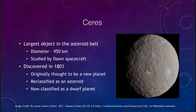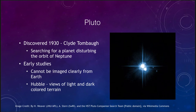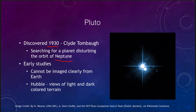The best known of the dwarf planets is of course Pluto, discovered in 1930 by Clyde Tombaugh. He was searching for a planet disturbing Neptune's orbit, and eventually found Pluto. It was later determined that Pluto simply wasn't needed — Neptune's orbit just wasn't well enough known at the time, and no other object was actually disturbing it.